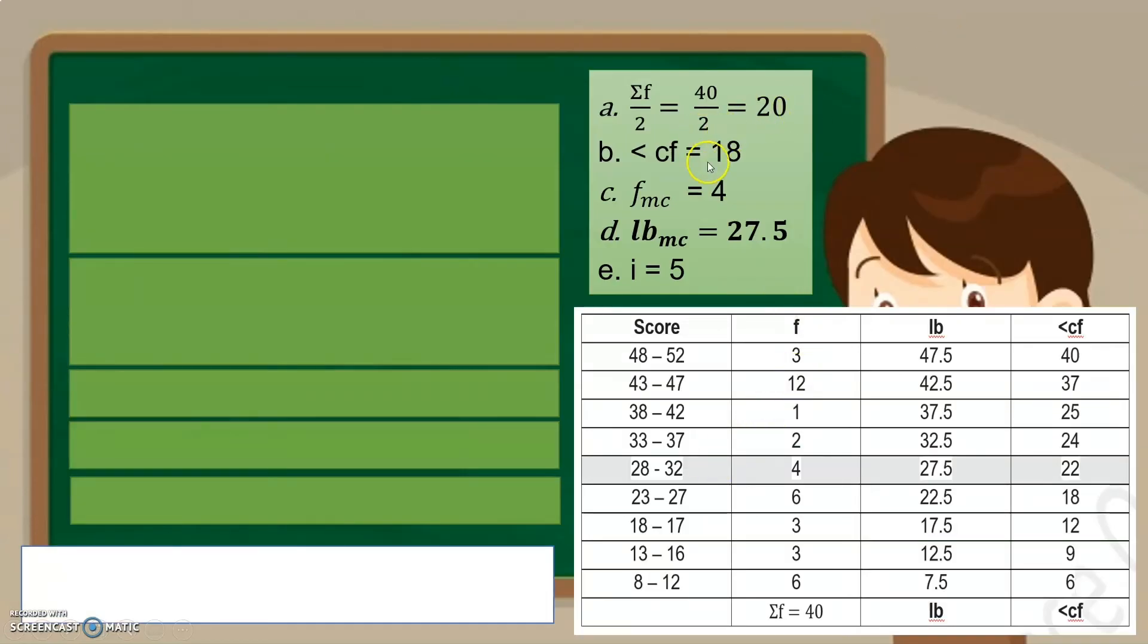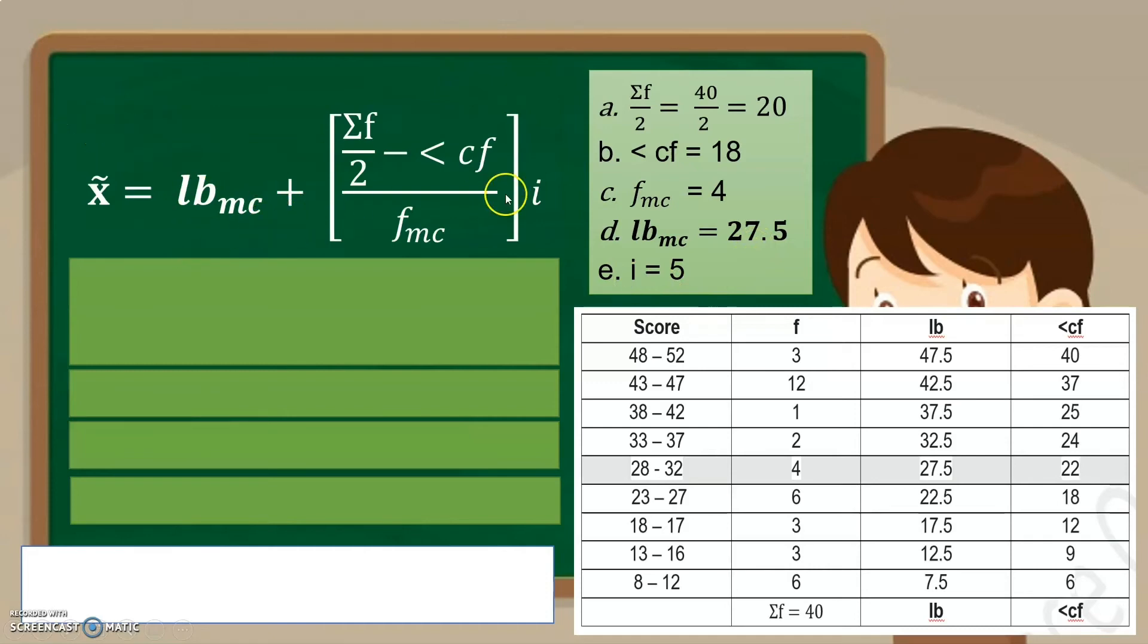So, ayan na, ito na yung mga value na kailangan natin isubstitute. We have the 20, 18, 4, 27.5, and 5. Okay, again, this is the formula.